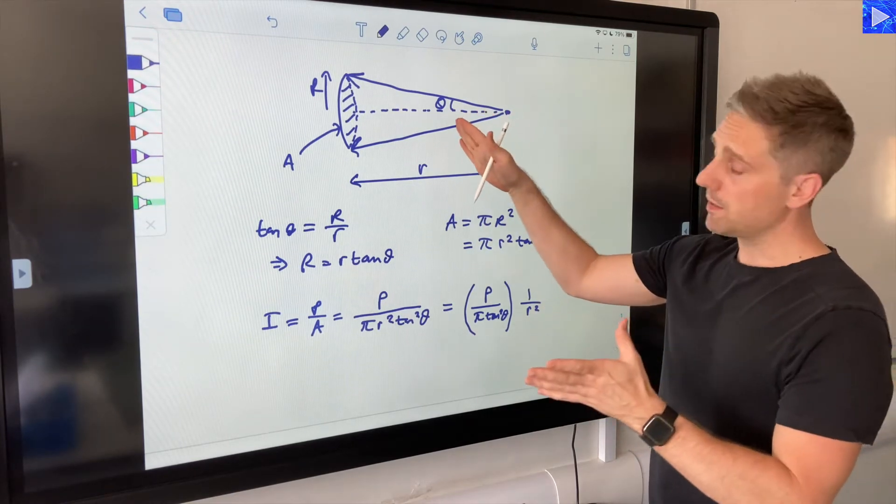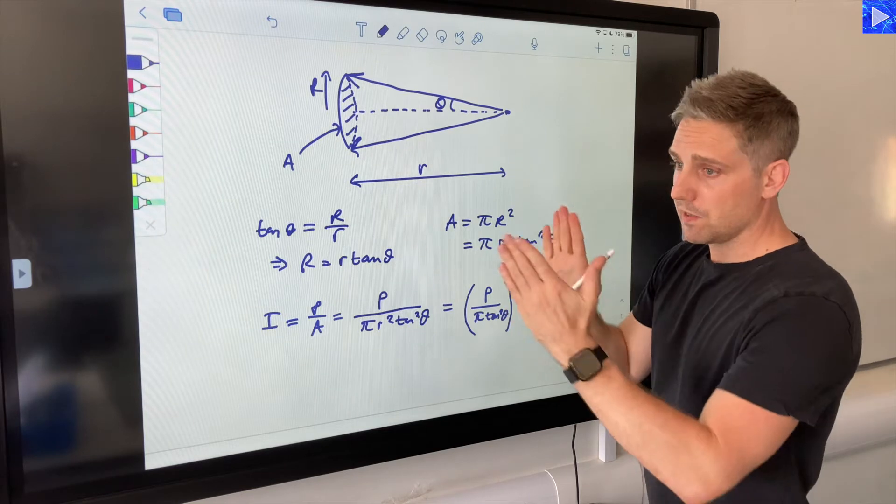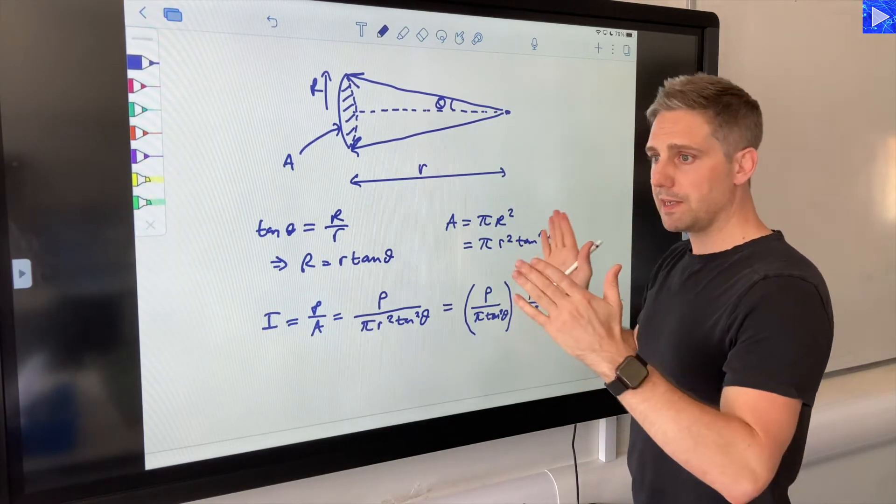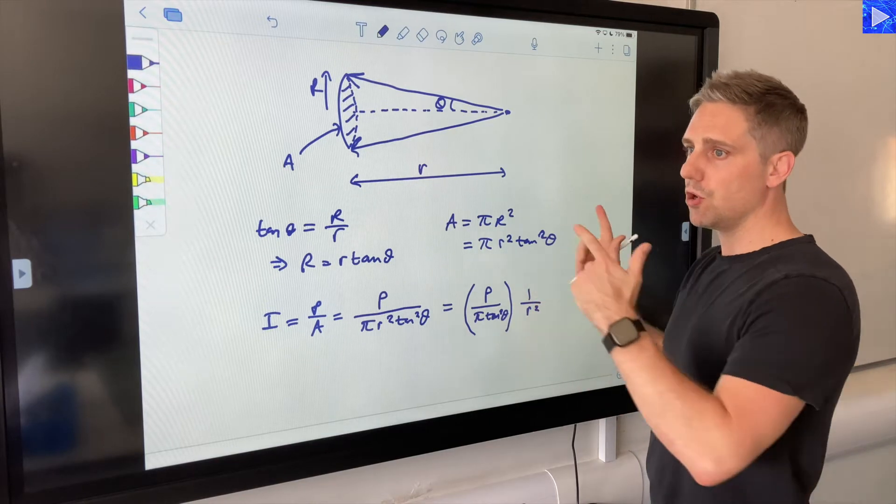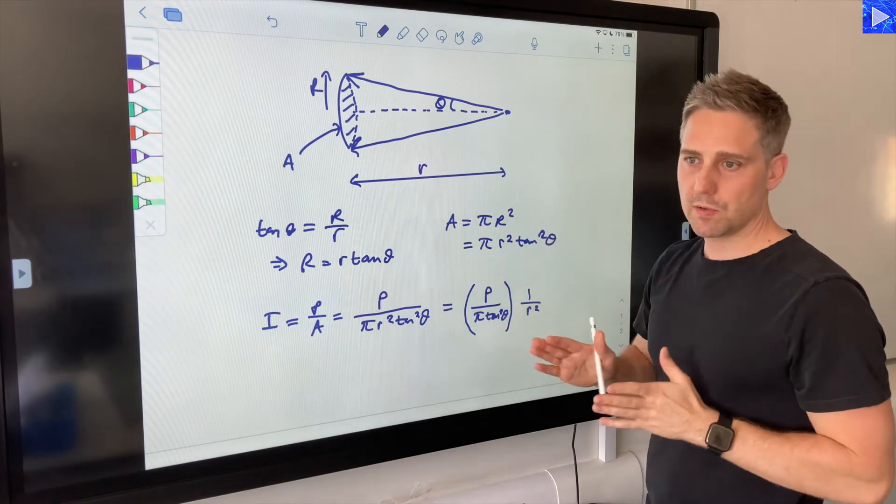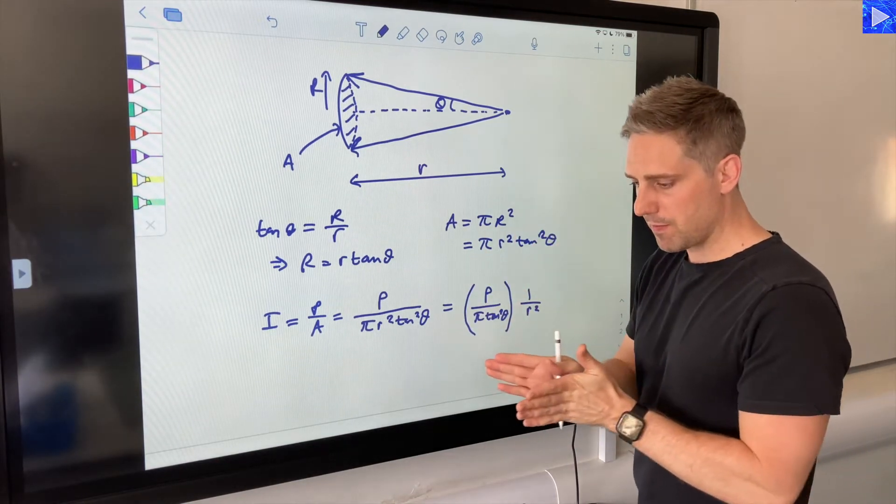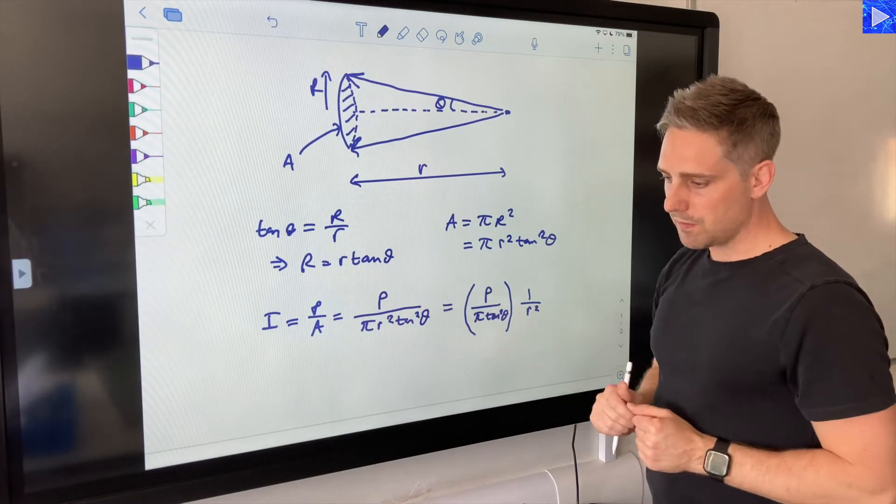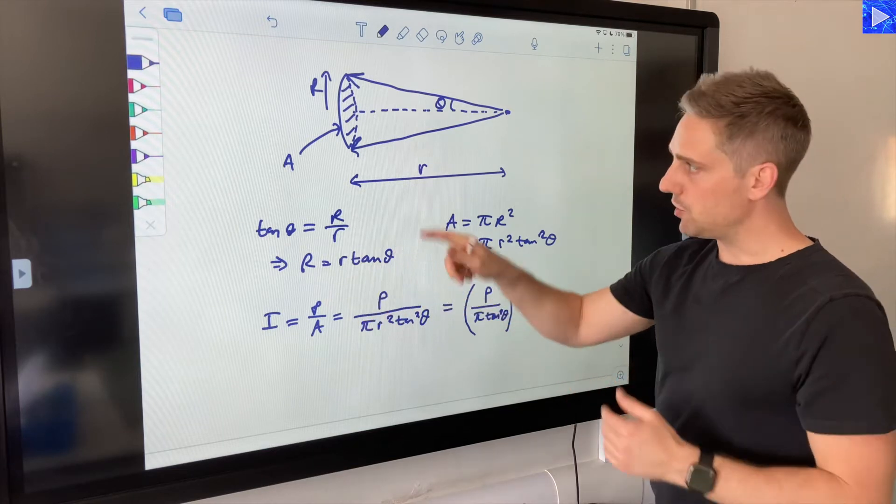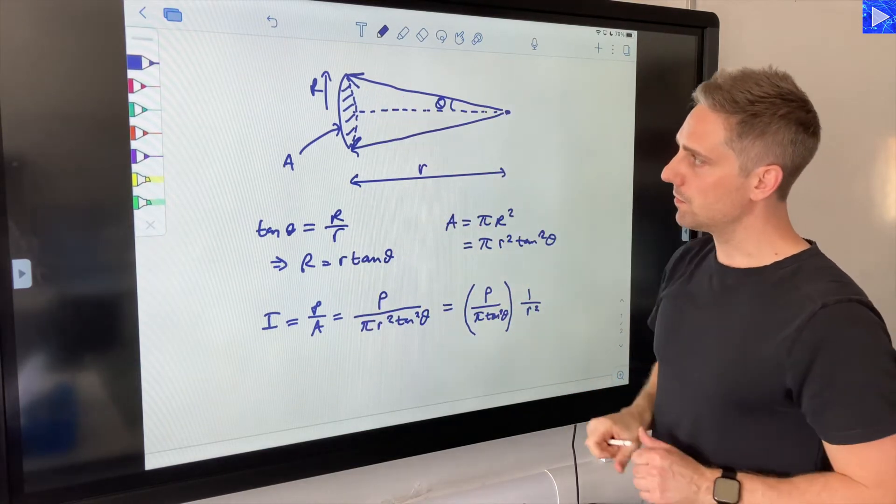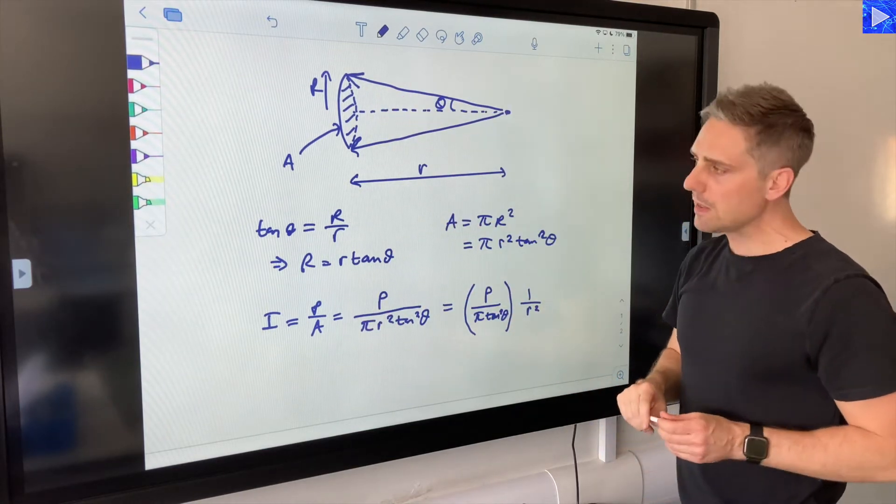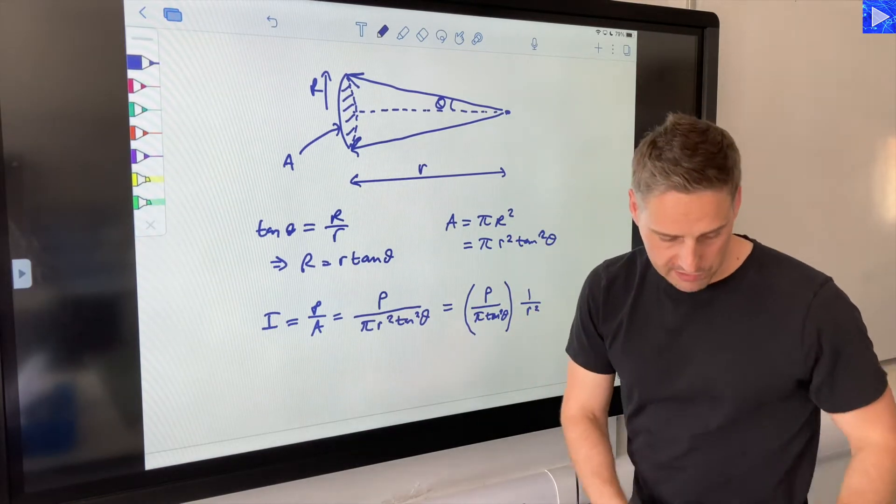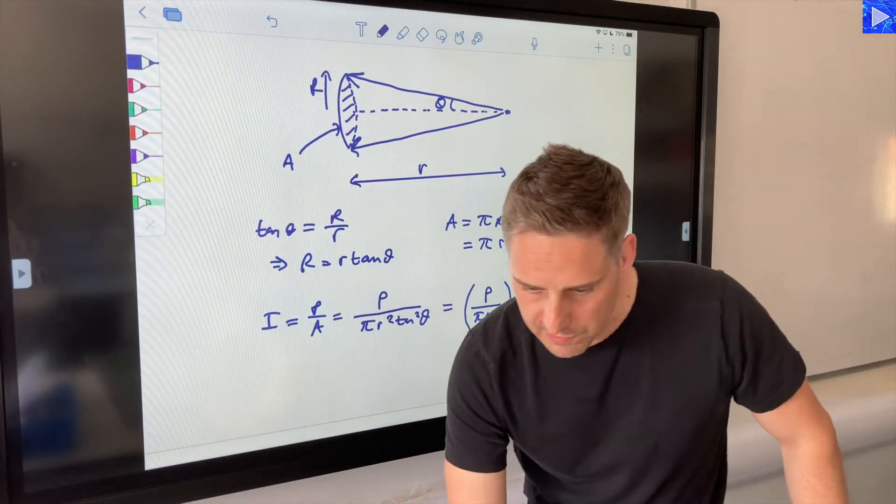Now I know that lasers do behave like this in a certain range, and so it might be a case that the torch obeys it in a certain range as well, but not all the time. Lasers kind of have a bit of curvature to the way the light spreads out to begin with, and then after that they have a region where they do spread out in this kind of straight conical way. It may be the same for the torch, but let's have a look at the data and see what happens. Let me switch over to this screen.